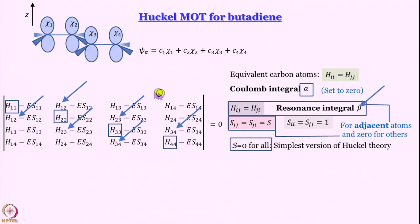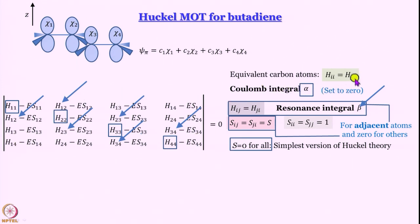We have expressed the pi molecular orbital as a linear sum of these 4 p orbitals on the 4 carbon atoms. In the secular equation, equivalent carbon atoms have H_ii equal to H_jj equal to alpha, and we set alpha to 0, making all measurements from there, because that denotes the energy of a p_z electron in the molecular framework. H_ij and H_ji are equal to the resonance integral only when i and j are adjacent to each other.